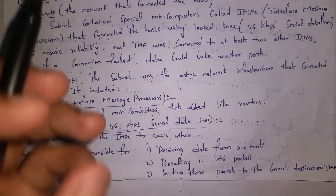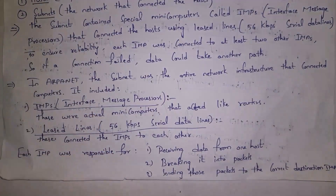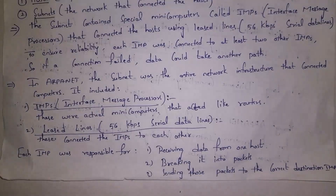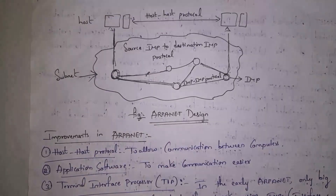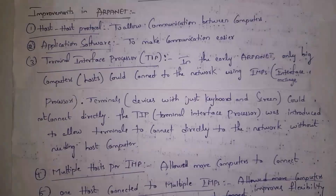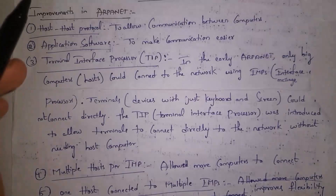The IMP device is responsible for receiving data from the host and breaking data into packets. As already mentioned, ARPANET uses packet switching where a message is broken into packets and each packet is sent separately. So this IMP is responsible to break data into packets and also responsible to send the packets to the correct destination IMP.